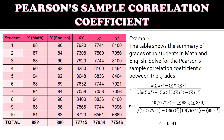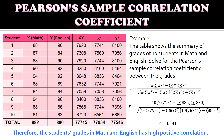To interpret: therefore, the students' grades in math and English have a high positive correlation. This means that as the grade in math increases, the grade in English also increases.